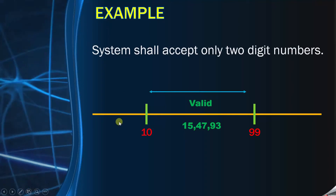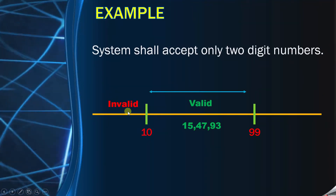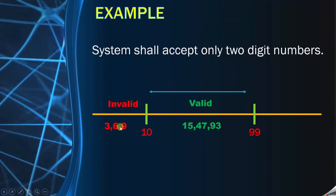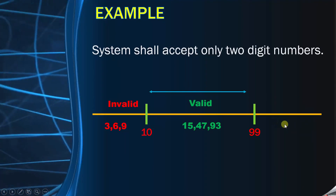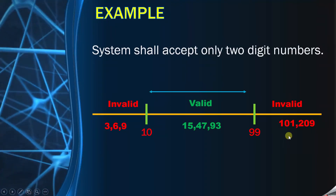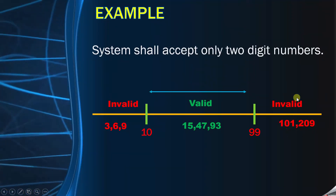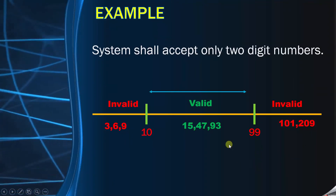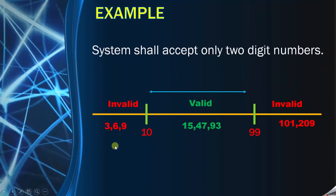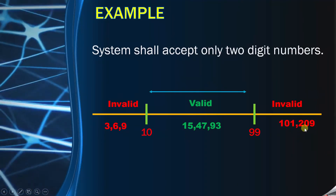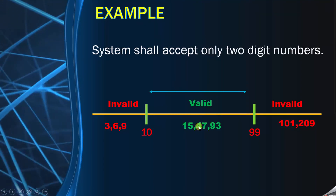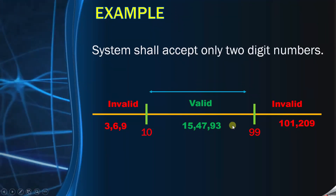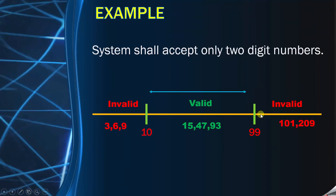If we come to the left side of 10, we will see these are the invalid values or the invalid class, because 3, 6, and 9 are not two-digit numbers and will not be accepted by the system. Similarly, if you come to the right-hand side after 99, that is also an invalid portion — those are three-digit numbers and will not be accepted by the system. While writing test cases, you have to take a value from each of these classes. From the left invalid class you can take 6, from the valid class you can take 15, and from the right invalid class you can take 209. If you take two values like 47 and 93 from the valid class, they both will behave the same way, so it is of no use to write two test cases for them. This is what equivalence partitioning is all about.